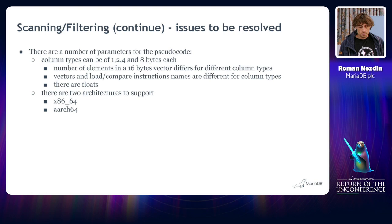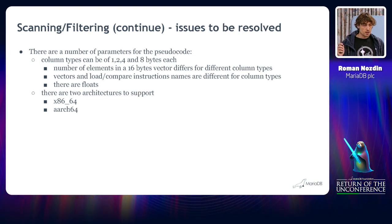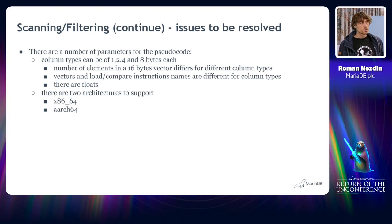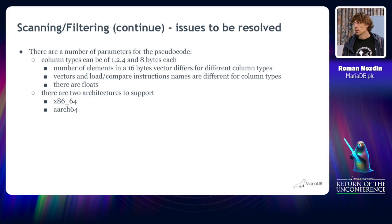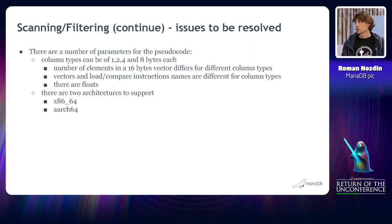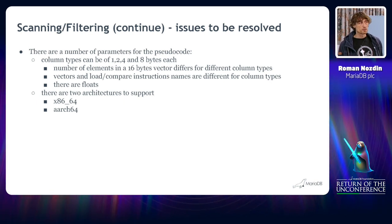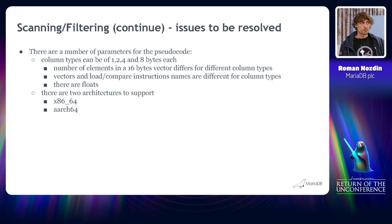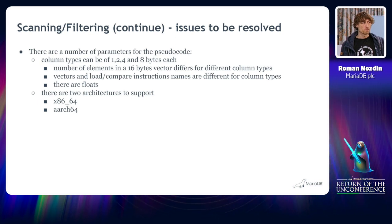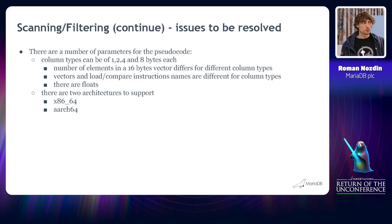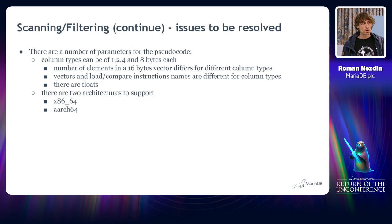So the thing is the code is very good and fine, but unfortunately there are a number of parameters that must be taken into account. For example, the size of the columns. That affects how many values are in the vector itself. Like, you can have two values for integer 64, you can have four values for 32, and so on, 8 and 16.